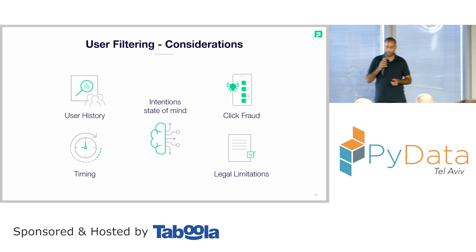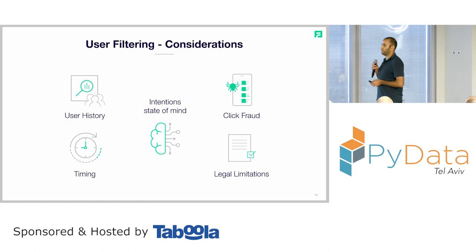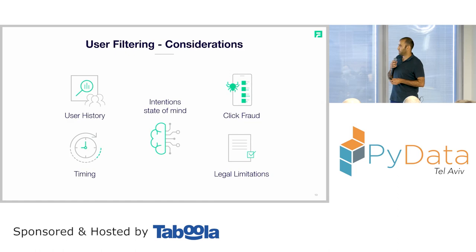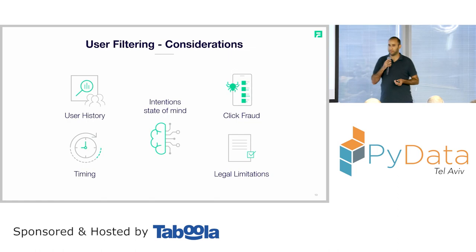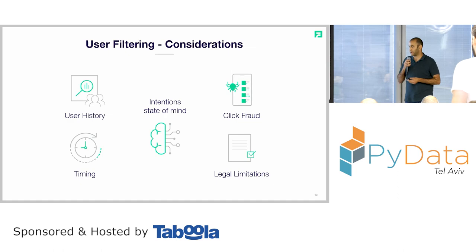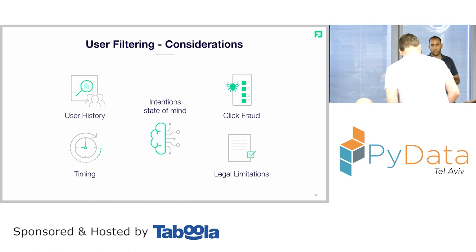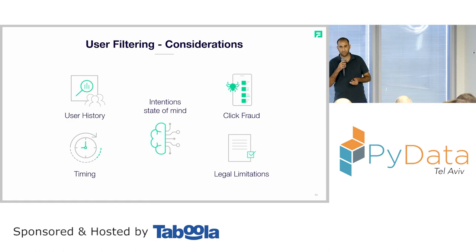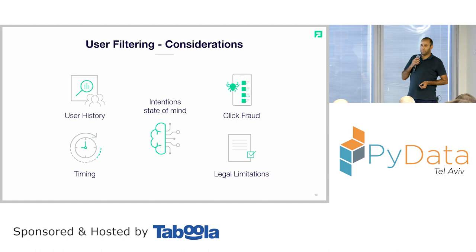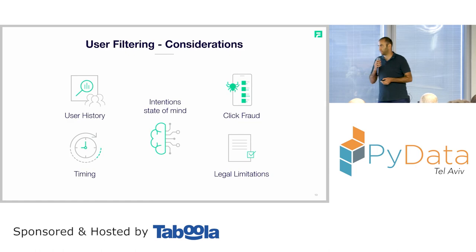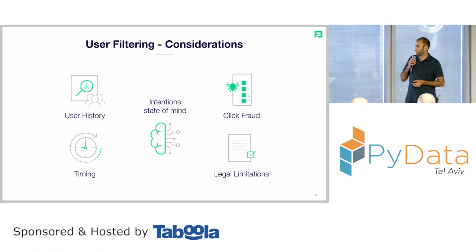User filtering is basically answering the question: as a bidder, do I want that user or that context — yes or no? There are several considerations an advertiser should take into account: user history — what did this user do in the past; timing — if it's 3 AM and the restaurant ad is for a closed restaurant, it may be irrelevant; click fraud — was this user fraudulent in the past; and legal limitations such as iOS 14, GDPR, etc.